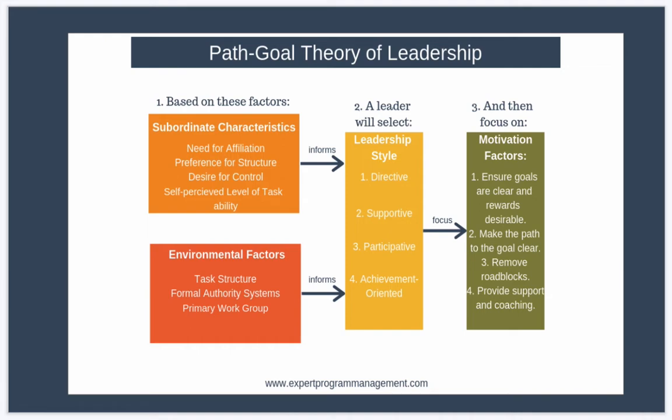So let's take a look at path-goal theory now. Just like expectancy theory, path-goal theory states how to go about motivating your team to achieve their objectives. And according to the theory, and we're starting in the green box on the diagram, you should motivate your team by firstly ensuring goals are clear and that desirable rewards are available, secondly by making the path to the goal clear, thirdly by removing obstacles and roadblocks that the subordinate might encounter en route to the goal, and fourthly by providing support, coaching and guidance.